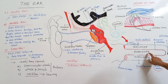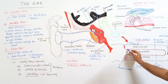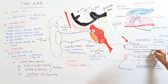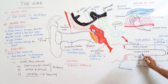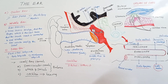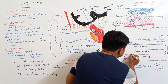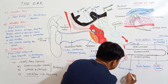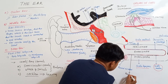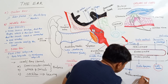Scala vestibuli and scala media are separated by the Reissner's membrane. Scala media and scala tympani are separated by the basilar membrane. Scala vestibuli and scala tympani are filled with perilymph, while scala media is filled with endolymph. Scala vestibuli and scala tympani communicate at their apex through the helicotrema.